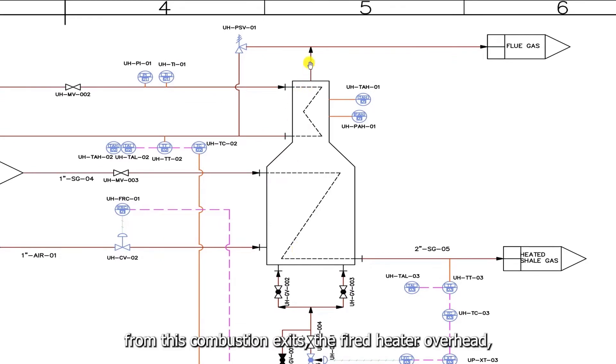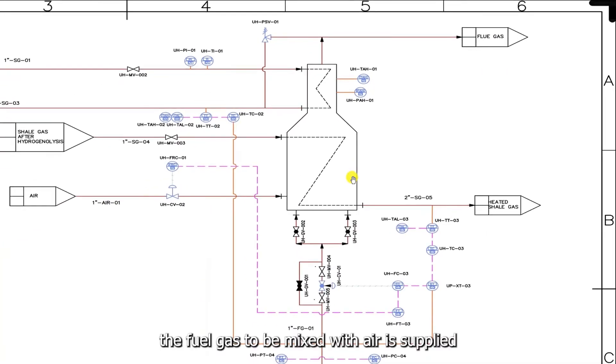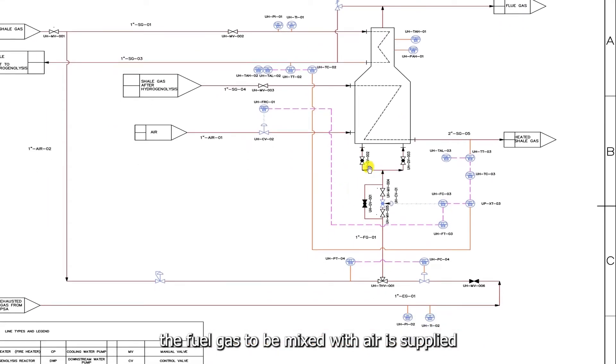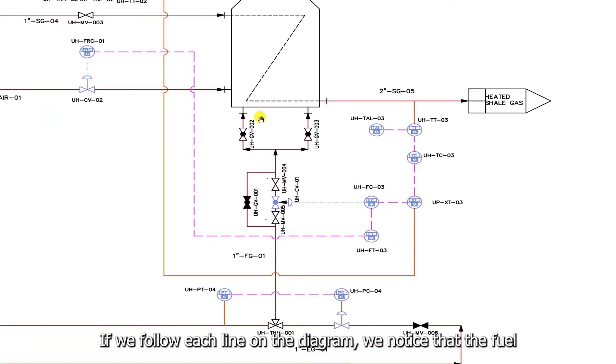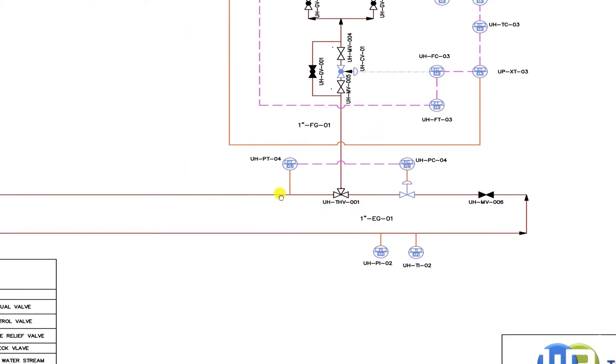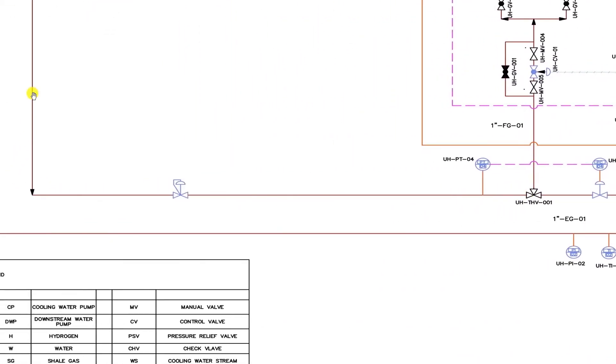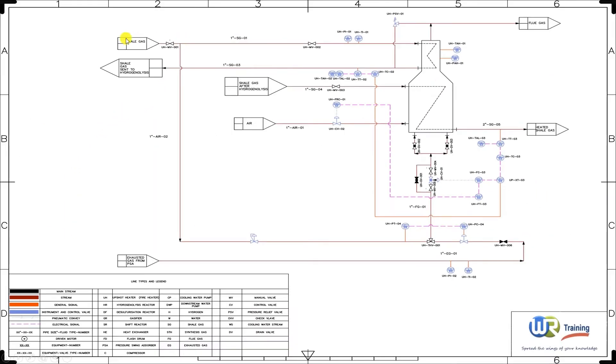The flue gas resulting from this combustion exits the fired heater overhead. The fuel gas to be mixed with air is supplied to the fired heater through these two lines. Let's examine them in detail. If we follow each line on the diagram, we notice that the fuel gas is made of the shale gas and also of the exhaust gas from the pressure swing adsorber, referred to on this diagram as PSA.